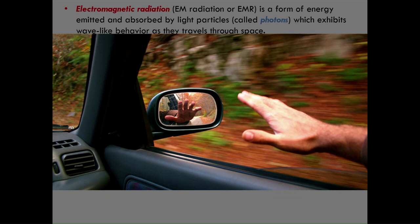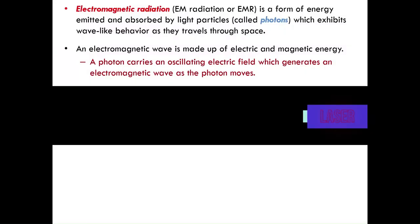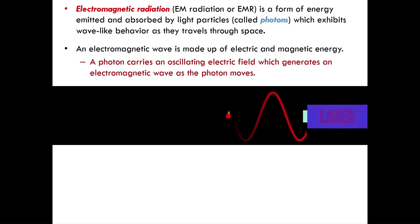A good analogy: imagine you're sitting in the passenger seat of a car on a highway. As you stretch your arm out the window and move it up and down while the car is traveling, your arm — the electric field — creates a wave as the car, the photon, moves along the highway. This graphic shows a photon being shot out of a laser. You can see the electric field oscillating above and below the photon as it moves, and light is also generating a wave shown as a trace of the oscillating electric field.